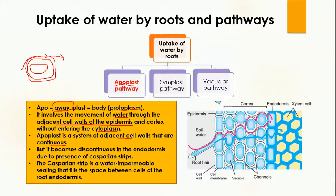The apoplast is a system of adjacent cell walls that are continuous. In this diagram, the red part shows the movement of water by the apoplast pathway — water moves through the cell wall of adjacent cells, which are joined together in a continuous system. However, this system becomes discontinuous at the endodermis because the endodermis contains casparian strips. Casparian strips are water-impermeable, so water can only reach the cortex by the apoplast pathway.